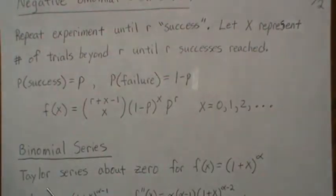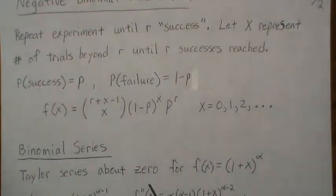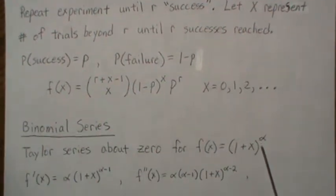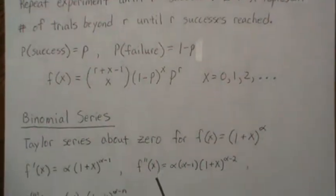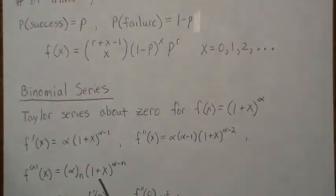So a Taylor series about zero, meaning a Maclaurin series, for f of X equals 1 plus X to the alpha, where alpha is any real number. To create this Taylor series we find the first derivative, the second derivative, the nth derivative.